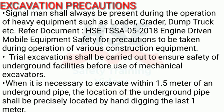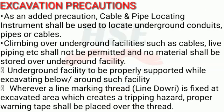Trial excavations shall be carried out to ensure safety of underground facilities before use of mechanical excavators. When it is necessary to excavate within 1.5 meters of an underground pipe, the location of the underground pipe shall be precisely located by hand digging the last 1 meter. As an added precaution, cable and pipe locating instruments shall be used to locate underground conduits, pipes or cables.